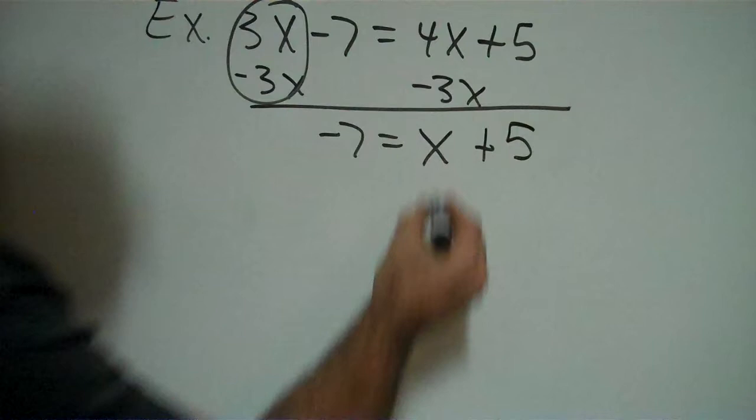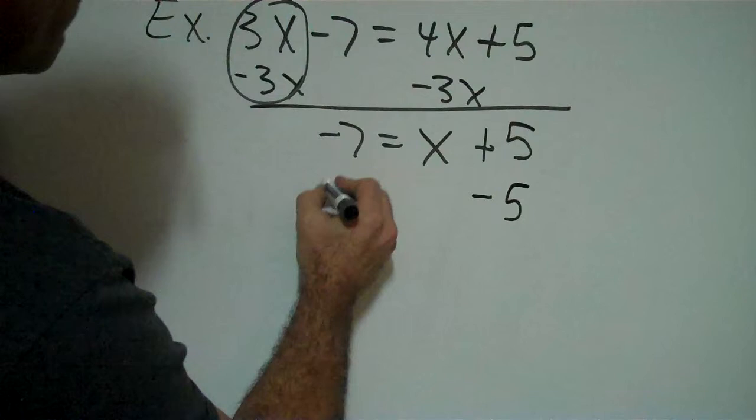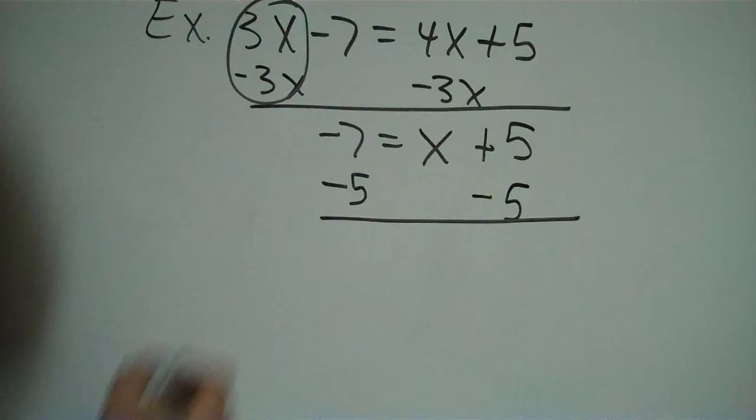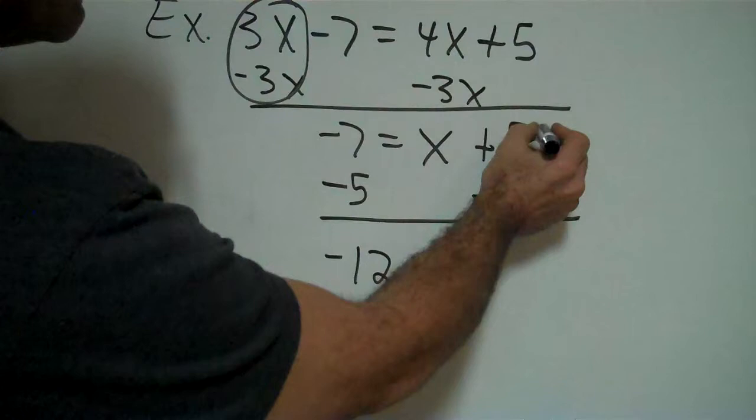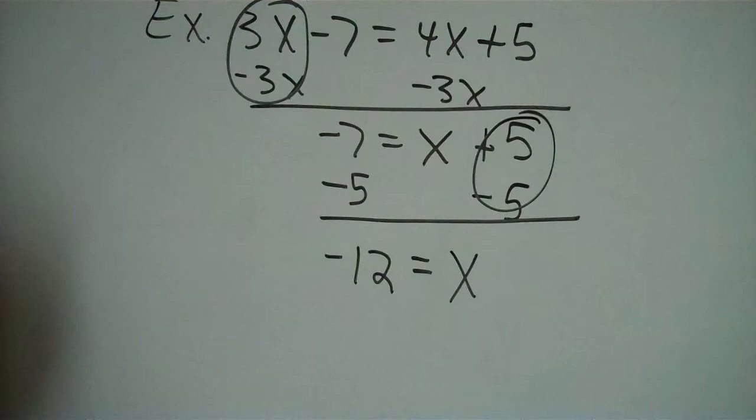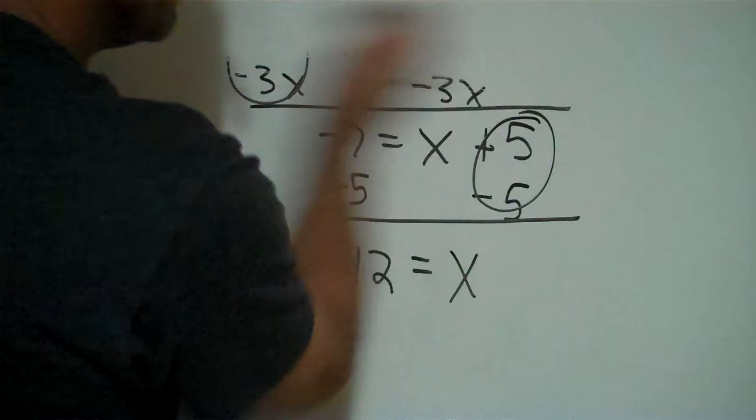That zeros out. I got negative 7 equals 4x minus 3x is 1x plus my 5. Now look, that's 1x like I wanted, but I want it by itself over here. So that plus 5, I'm going to move it by subtracting 5 from both sides. Because watch what happens. Negative 7 and negative 5 equal a negative 12. Remember, when you add like signs, add numbers and keep that sign. Then I'll bring down that x and the plus negative 5's cancel out. So my final answer is negative 12 equals x or x equals negative 12.